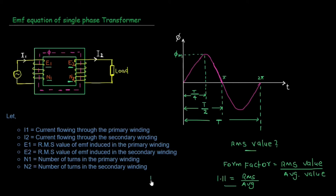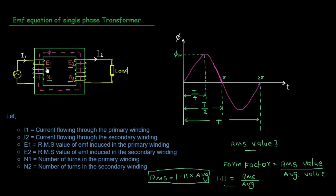RMS value is equal to 1.11 multiplied by the Average value. The capital letter represents the RMS value. Now we have to look at the EMF equation.